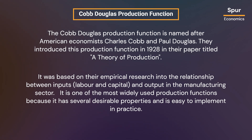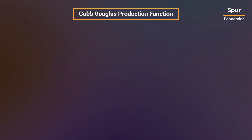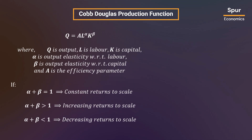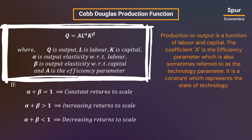It is one of the most widely used production functions because it has several desirable properties and is easy to implement in practice. Now let us see what the Cobb-Douglas production function looks like. In the function shown here, Q represents the production or output, and the inputs are L for labor and K for capital — that is, production or output is a function of labor and capital.